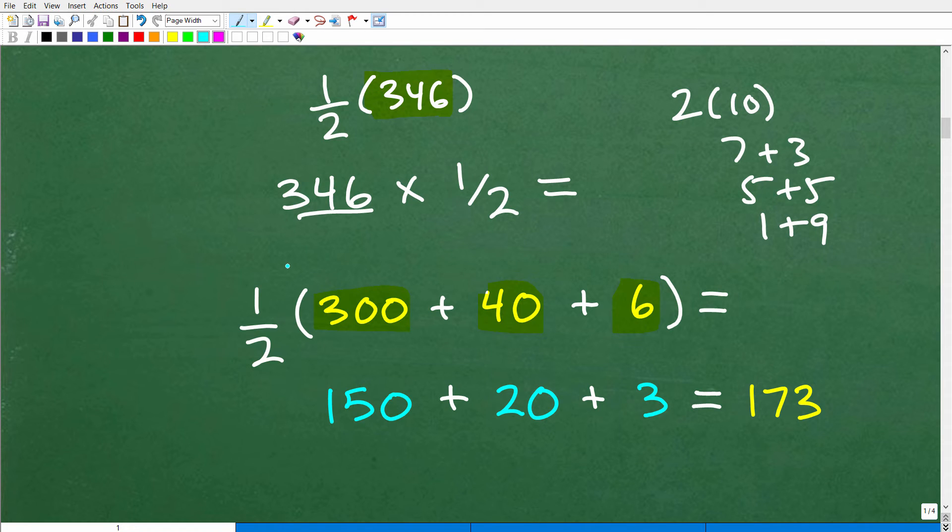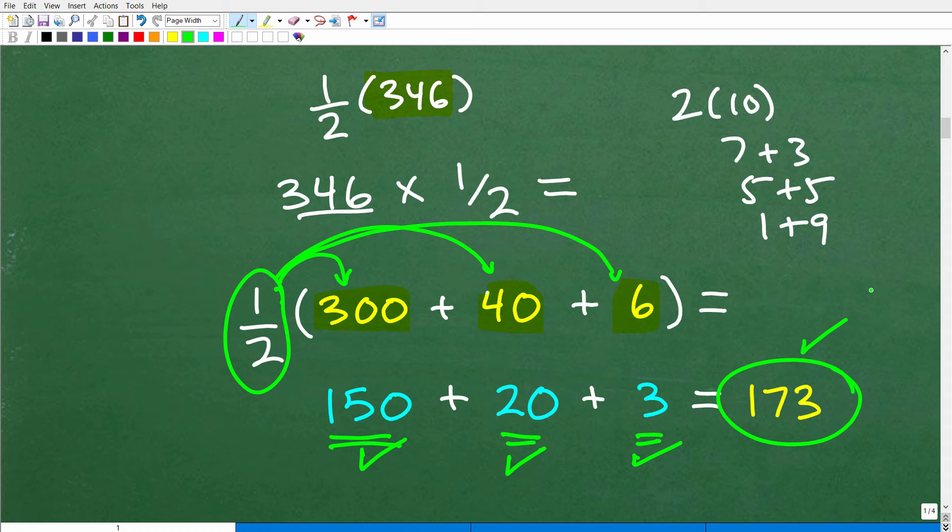Now, I can use the distributive property and I can go, all right, this 1 half times 300. What's 1 half of 300? Okay. Most people are like, oh, that's 150, right? So 1 half times 300 is 150. 1 half times 40. What's 1 half of 40? It's 20. And then 1 half of 6 or 1 half times 6 is 3. And what do we have here? 150 plus 20. We can kind of do this math in our head. That's 170 plus another 3 is 173.